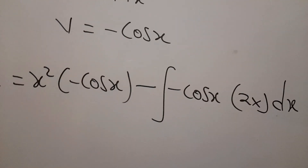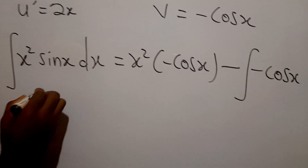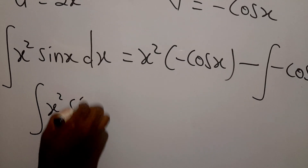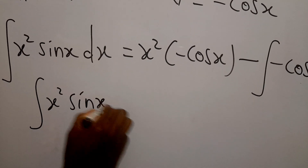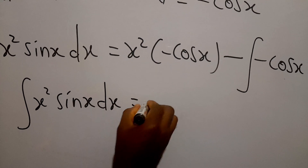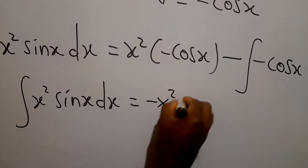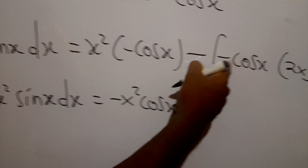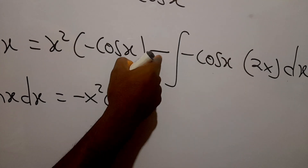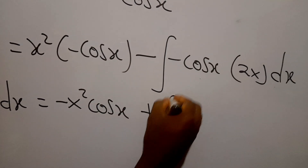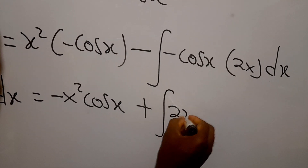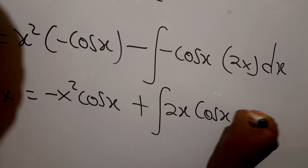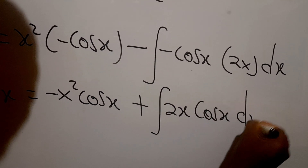Let me simplify this further. The integral of x squared sine x dx is equal to negative x squared cos x. Since the negative sign is a constant I can bring it out, giving plus the integral of 2x cos x dx.